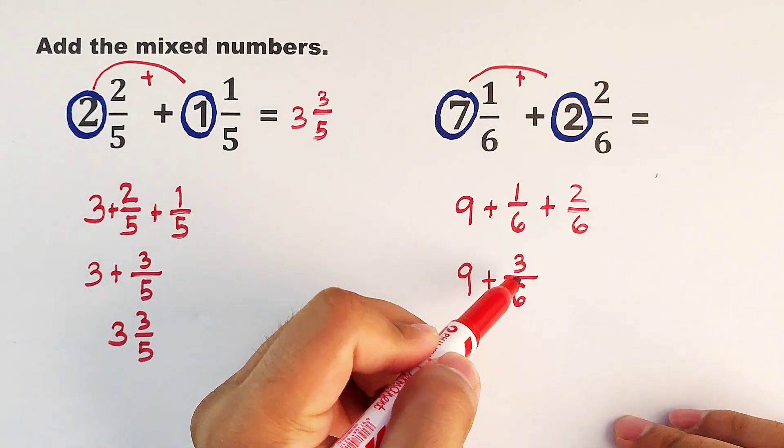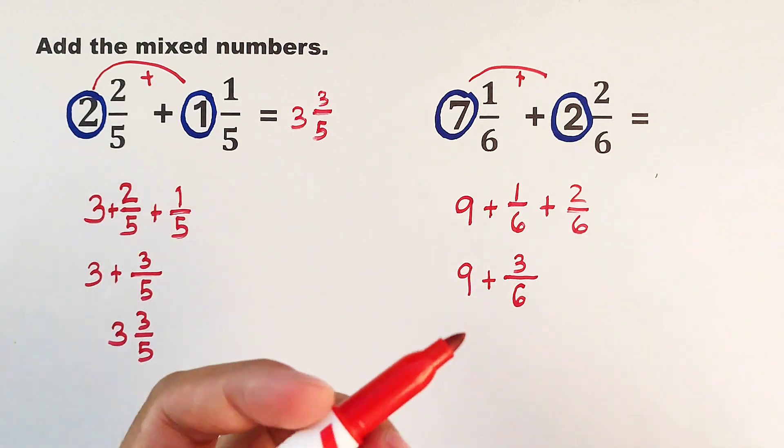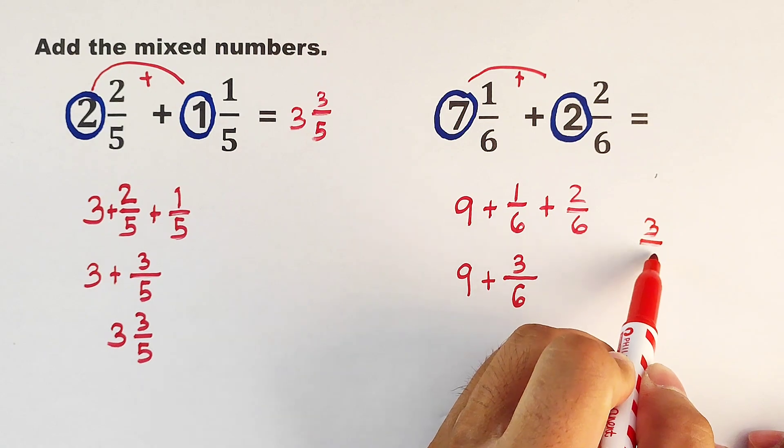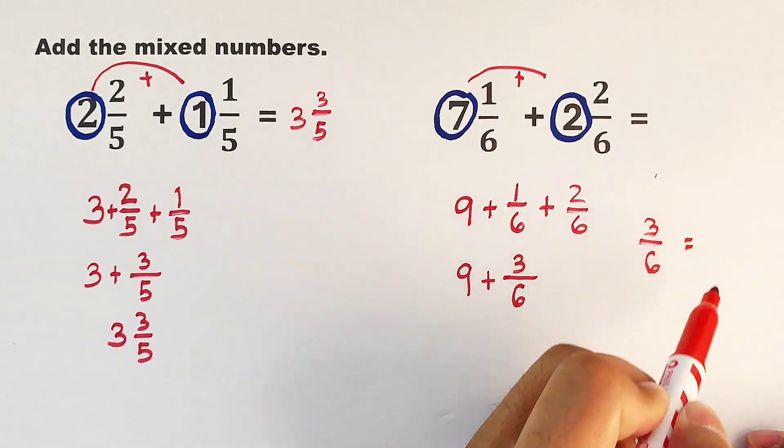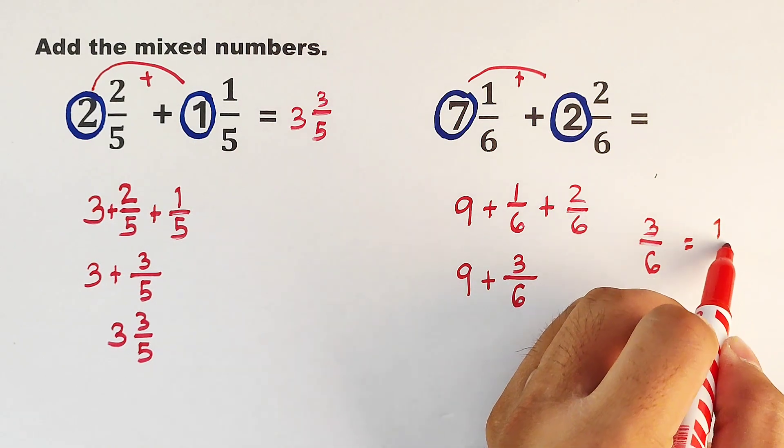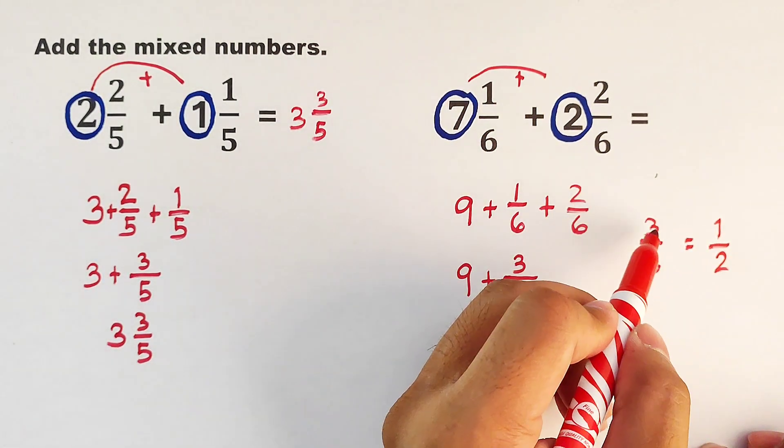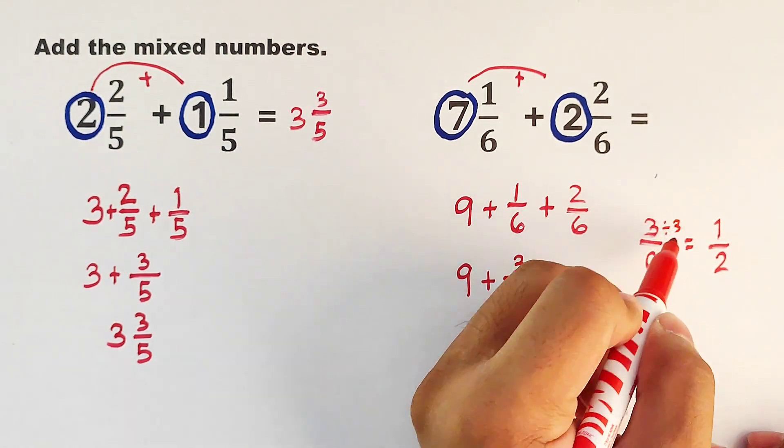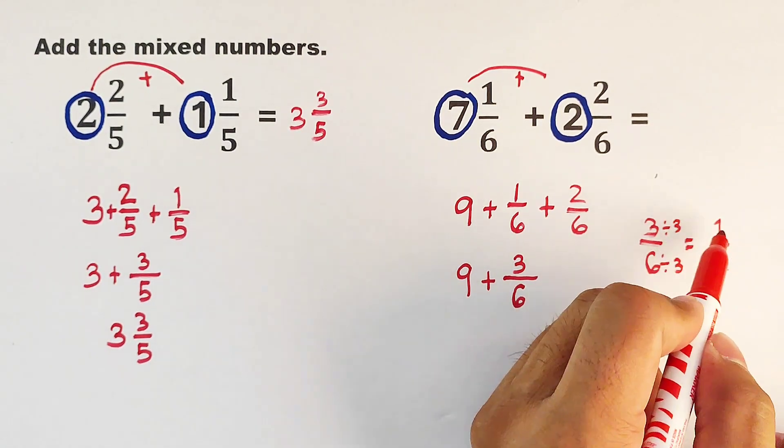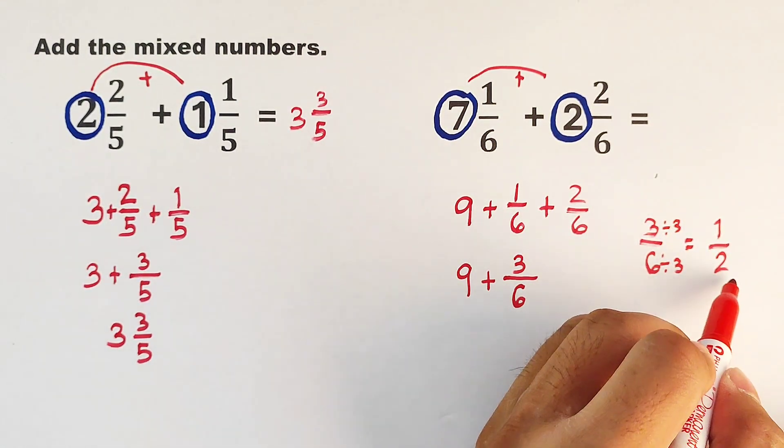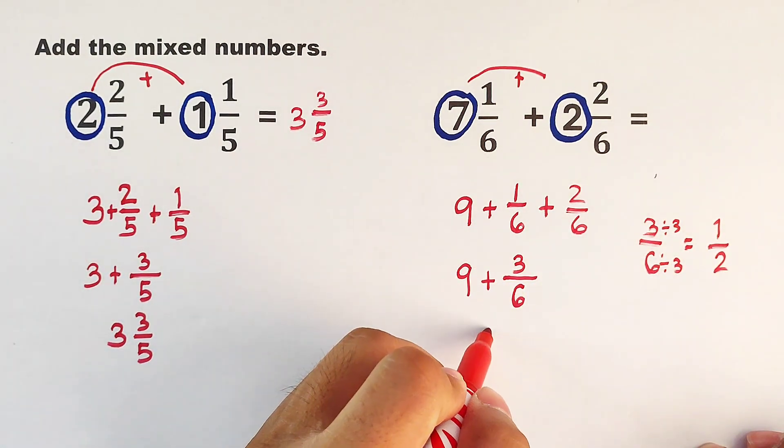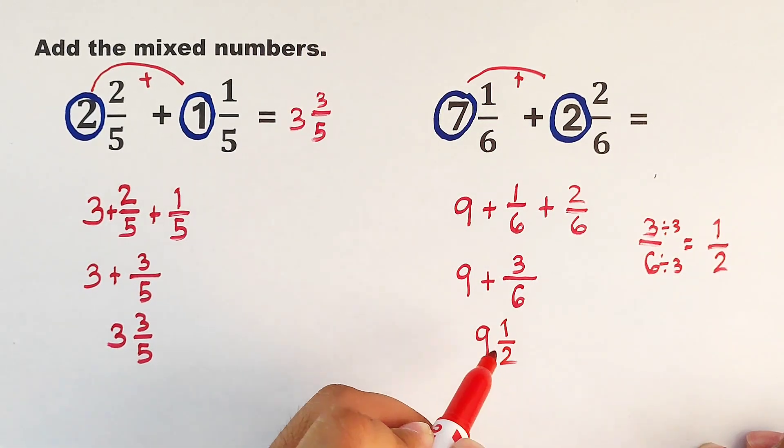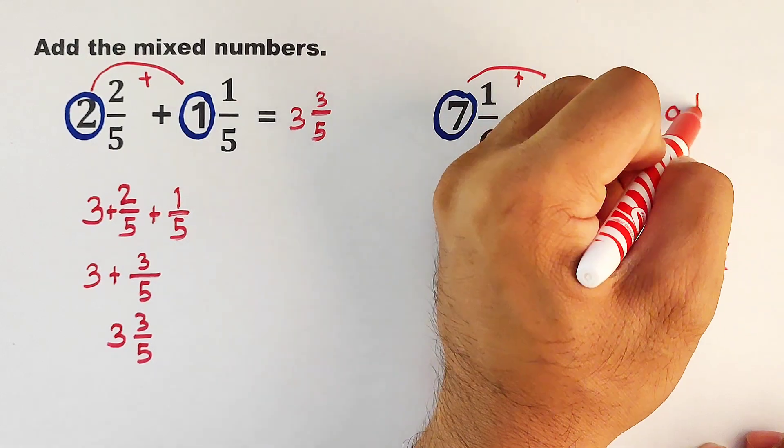And as you can see, we have the fraction that is 3 over 6. This one can be expressed in lowest terms. So let's put here the 3 over 6 and let's think, what is the lowest term of 3 over 6? Okay, very good. This one can be expressed as 1 half. Why? Because their greatest common factor is 3, meaning we can divide this number by 3. 3 divided by 3 is 1, and 6 divided by 3 is 2, meaning our answer must be 9. And instead of 3 over 6, we can use 1 half. So the correct answer is 9 and 1 half. And that's very easy for you to follow.